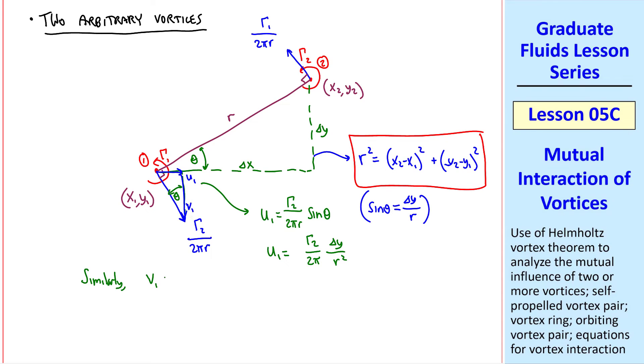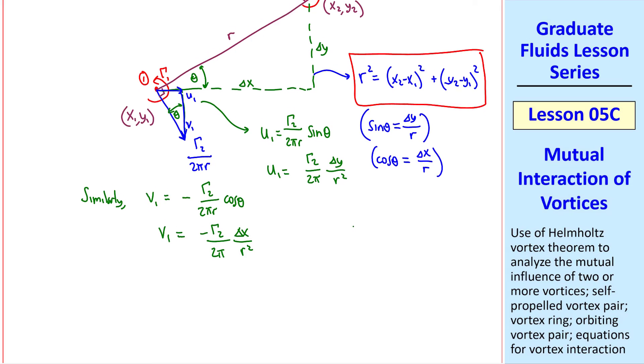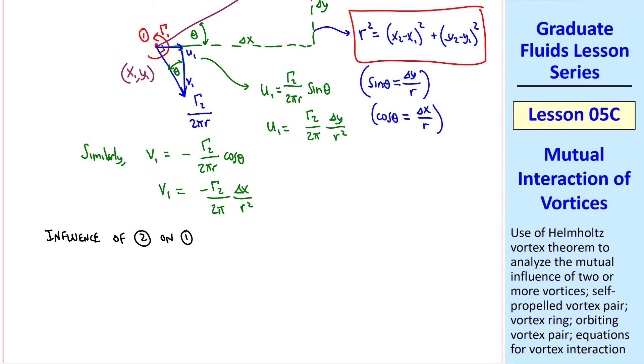Similarly, this component v_1 can be written as negative gamma_2 over 2 pi r cosine theta, where notice the negative sign, because v is always defined as positive up, but it's negative here. And cosine theta, again from the big triangle, is delta x over r. So v_1 is negative gamma_2 over 2 pi delta x over r squared. In terms of our original variables, the influence of vortex 2 on vortex 1 is u_1 equal gamma_2 over 2 pi y_2 minus y_1, which is our delta y, over r squared.